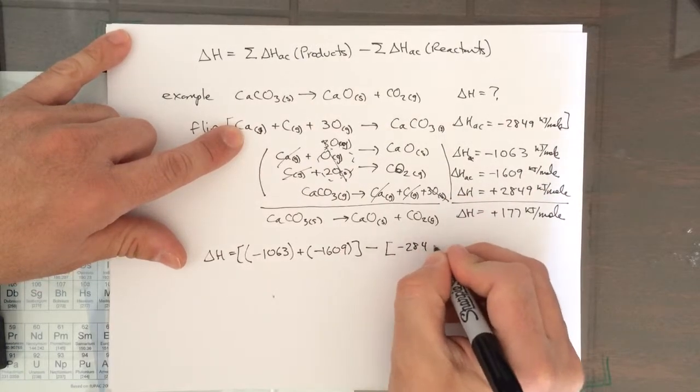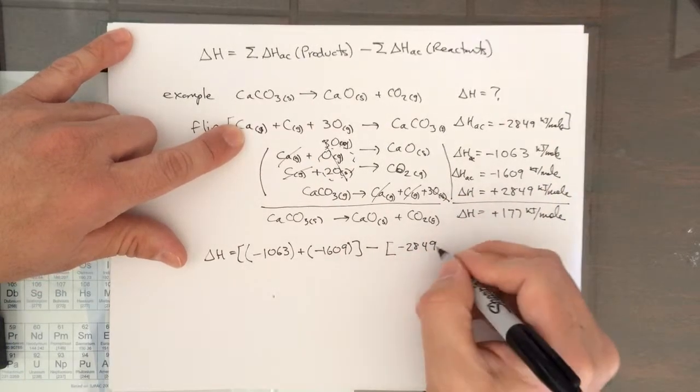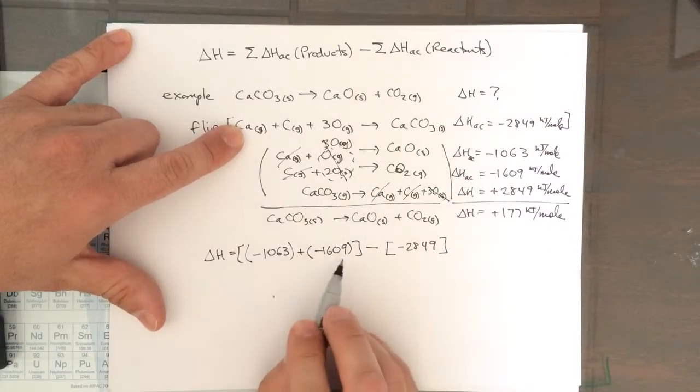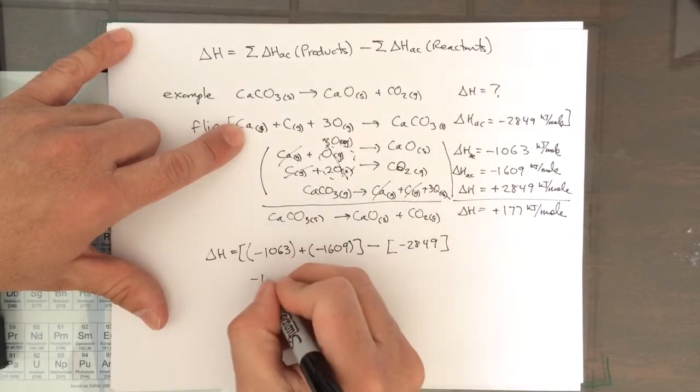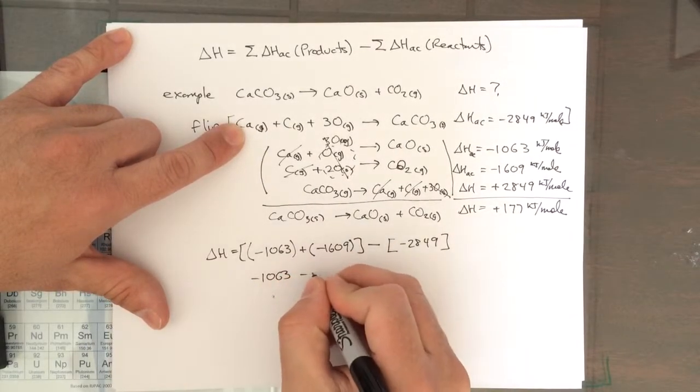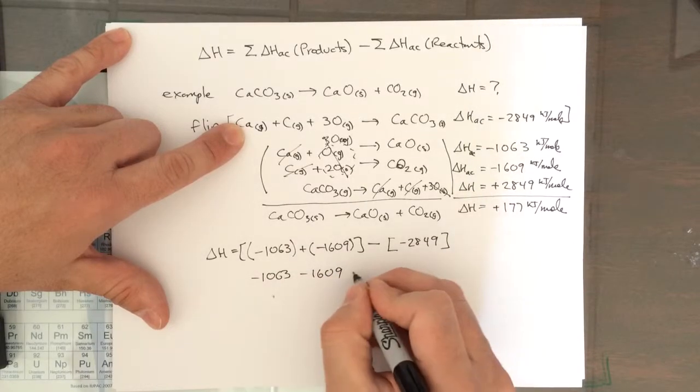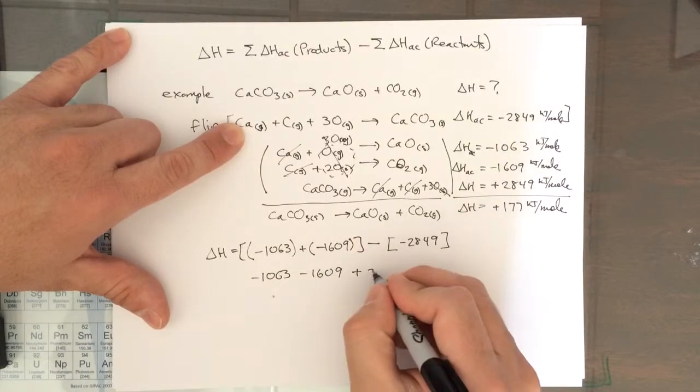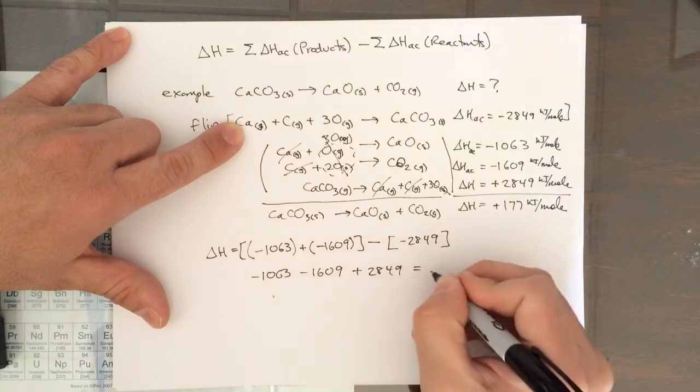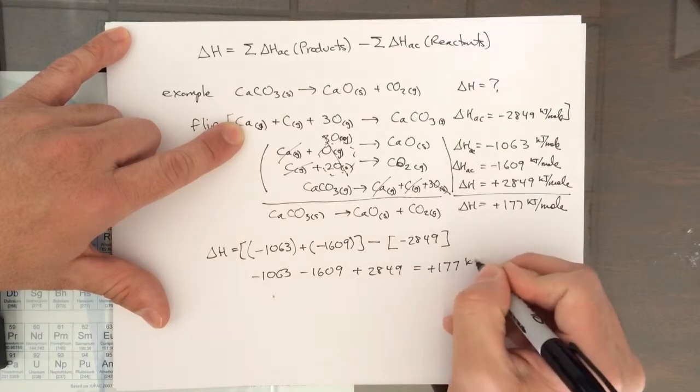And then the minus sign in the equation is now going to flip the minus sign of the delta HAC for the one and only reactant. So now this becomes negative 1063. And then negative times negative is positive 2849. Those add up to 177 kJ per mole.